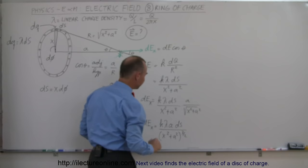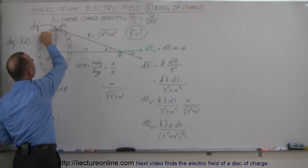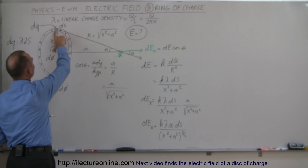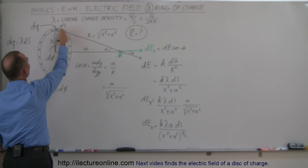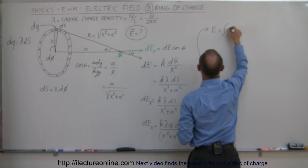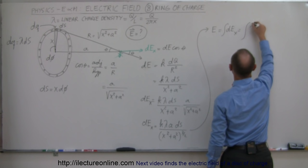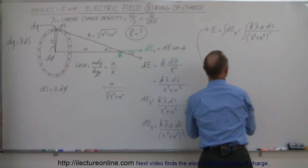To find the total electric field, I need to sum all those little line segments together. Notice that for each little segment the magnitude of dEₓ remains constant, and both x (the radius) and a (the distance) are constants — only the angle φ or the line segment ds varies. So the total E in the x direction equals the integral of k λ a ds divided by (x² + a²)^(3/2).